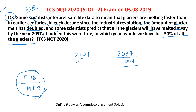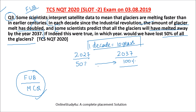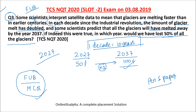Since the glacier melt doubles every decade (10 years), and 100% will be melted by 2037, then one decade earlier — 2037 − 10 = 2027 — only 50% would have melted. So the answer to fill in the blank is 2027. No pen and paper needed for this kind of problem either.